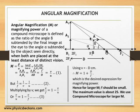Now let's talk about the angular magnification. Angular magnification or magnifying power of a simple microscope is defined as ratio of angle β subtended by the image on the eye to the angle subtended by the object seen directly.